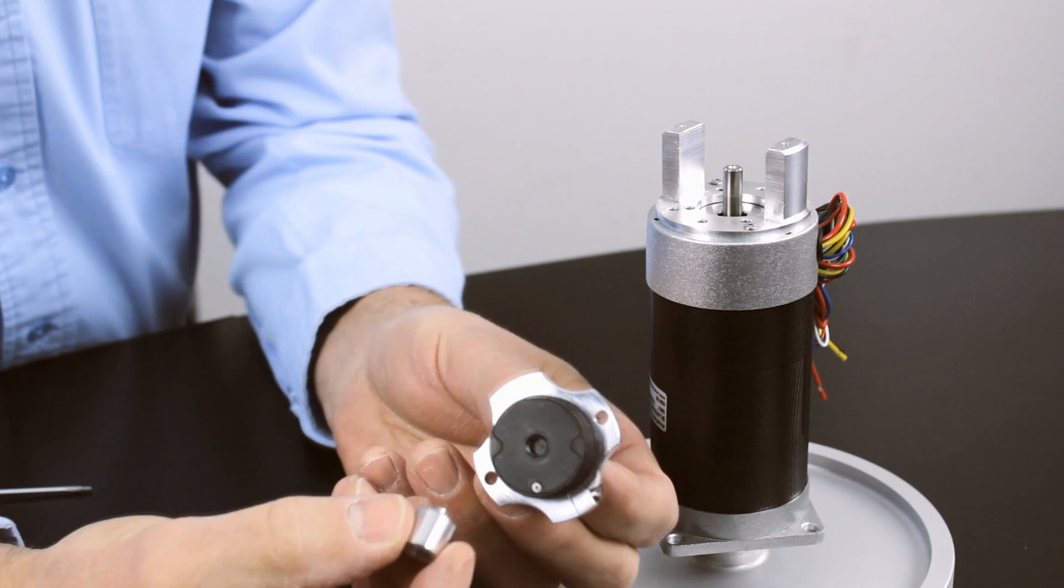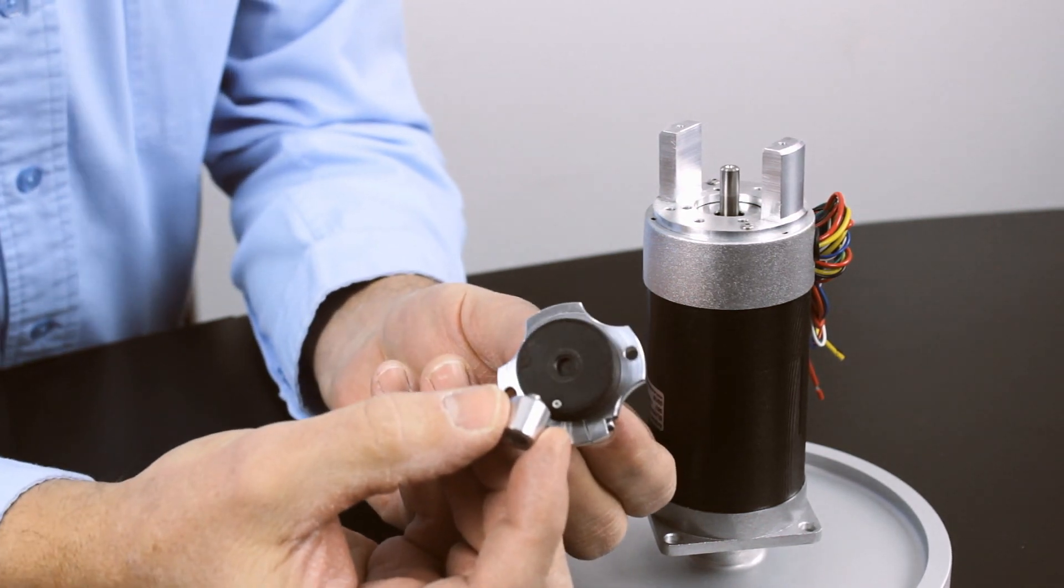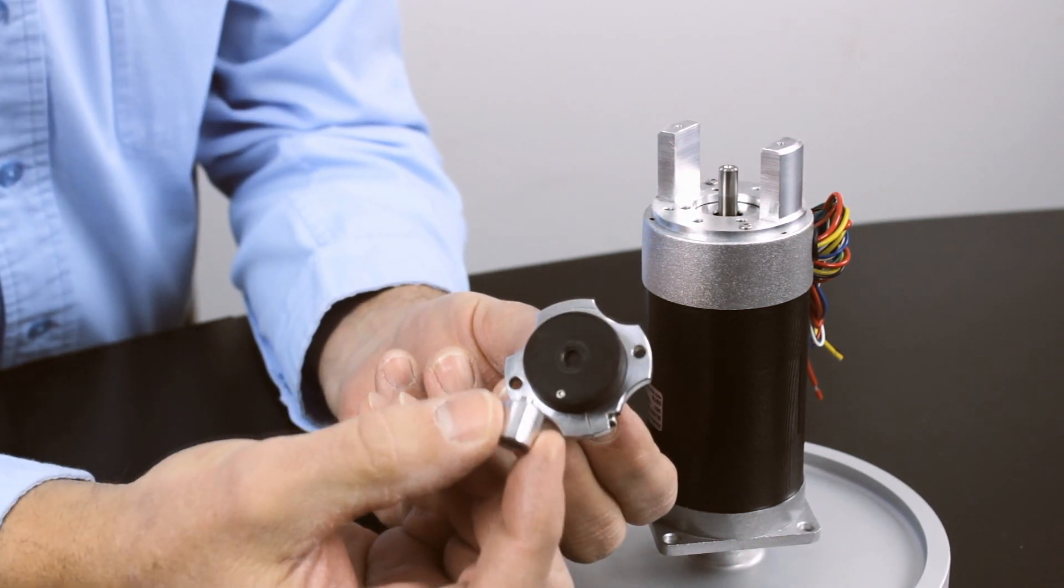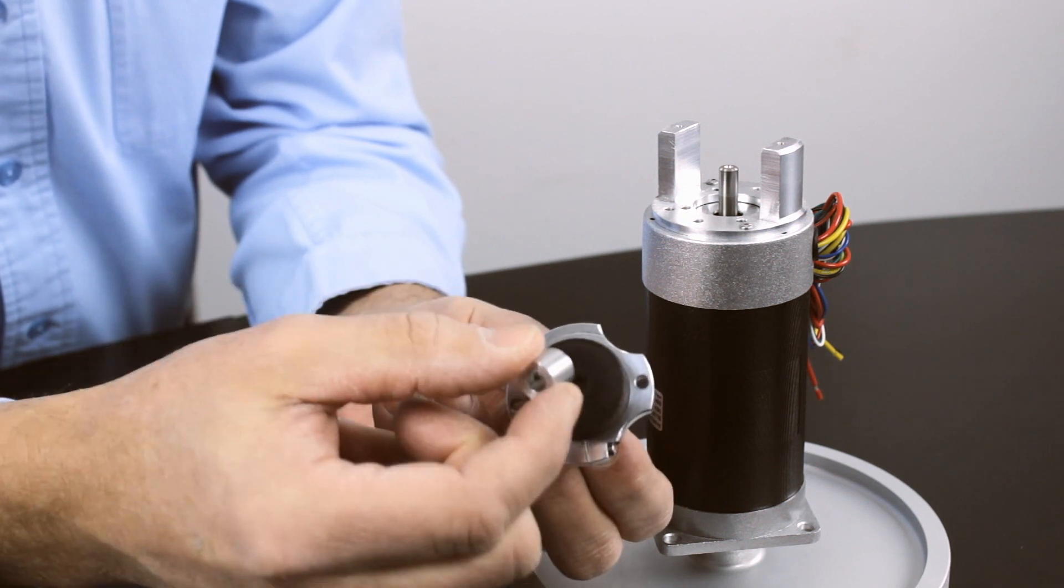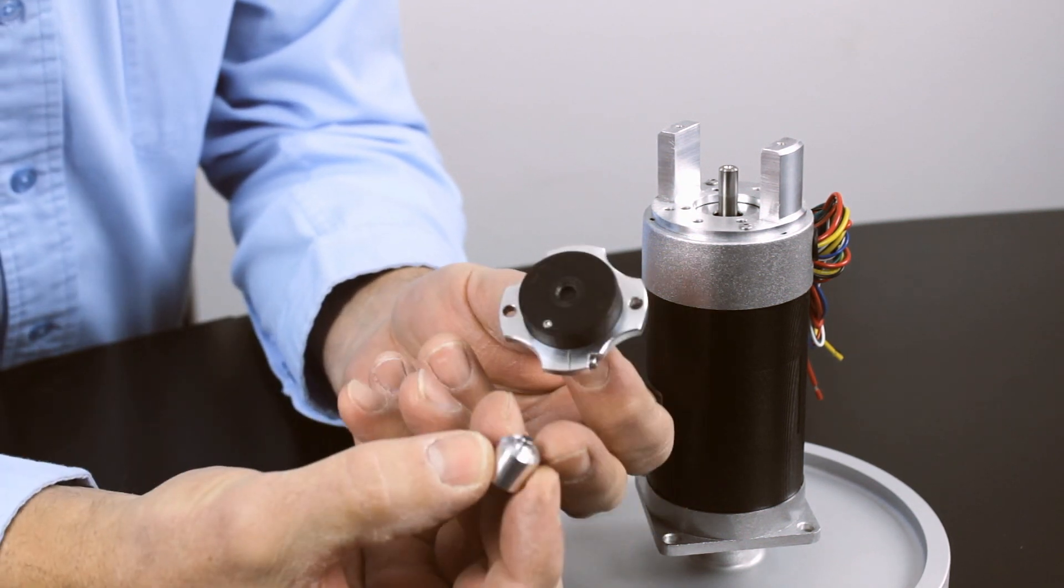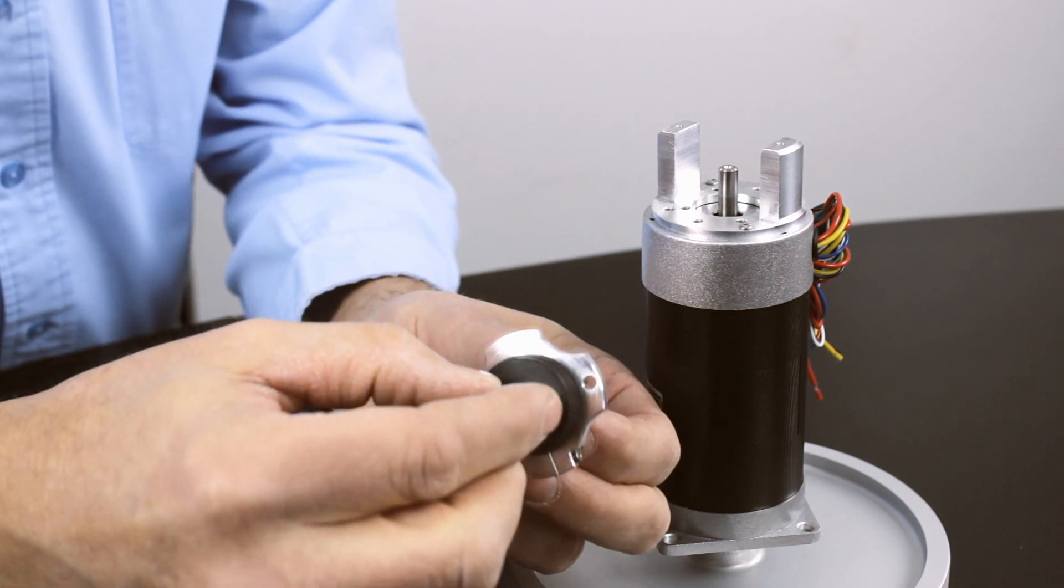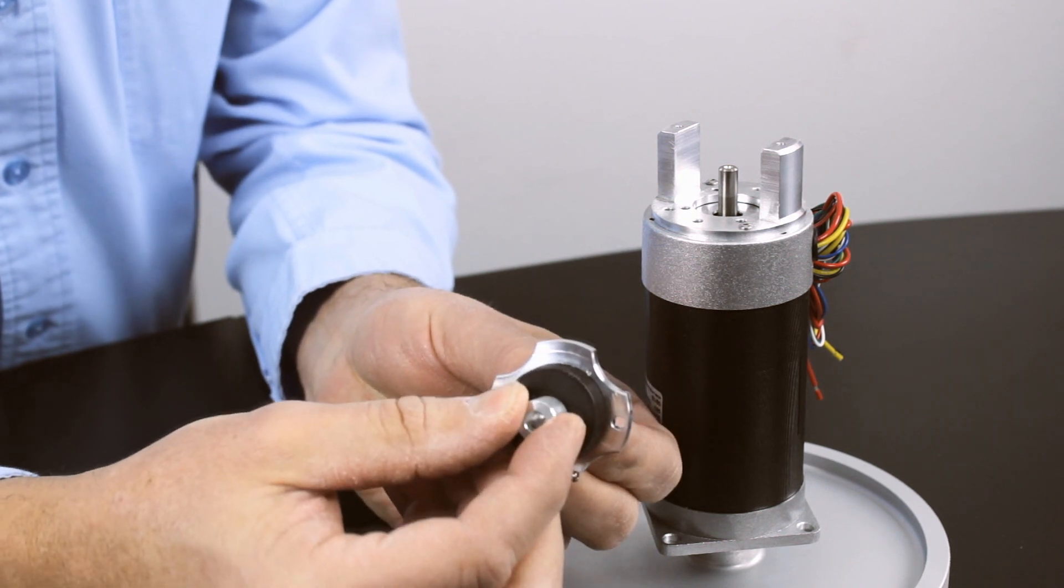To illustrate how the self-centering alignment feature works, there's an internal taper on the bottom of the encoder module housing that fits with the taper on the magnet holder, allowing it to self-align when pressed together.